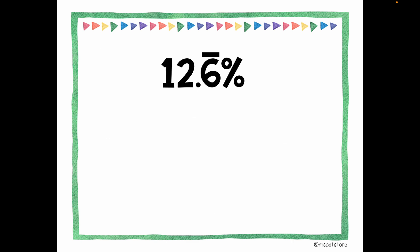I'd like you to look at this example. This one says 12.6̄ percent — there is a bar notation on top, which means the six keeps repeating. So we have 12.6666... and so on. Now I'm going to shift my decimal point two spaces to the left: one and two. This equals 0.126̄, with the bar notation on top to show the six repeating.